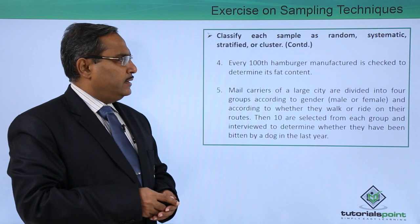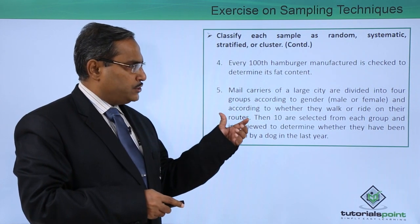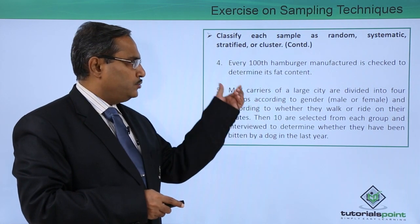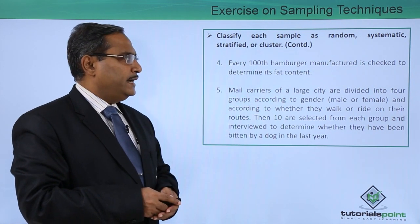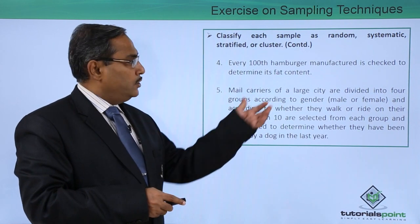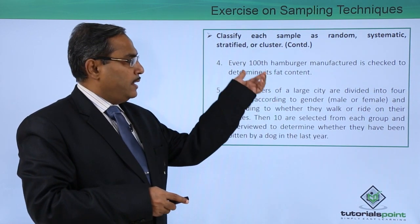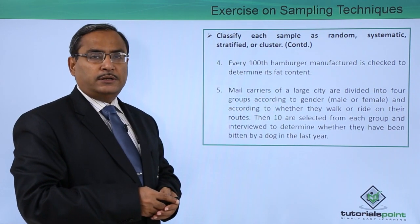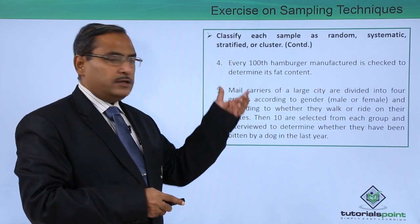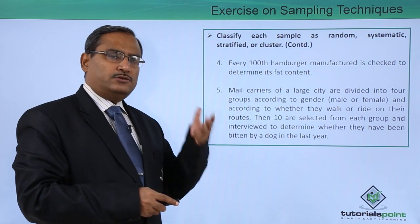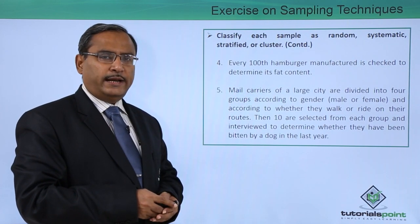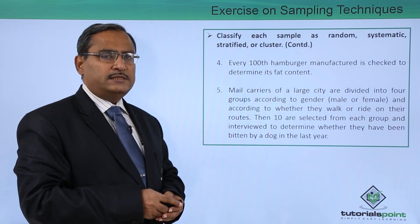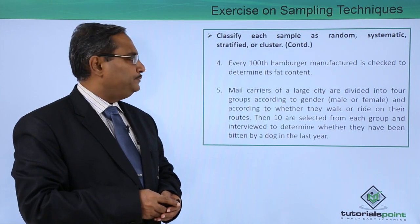Every hundredth hamburger manufactured is checked to determine its fat content. Since we are selecting every hundredth hamburger, this gives us the idea that it is a good example of systematic sampling.